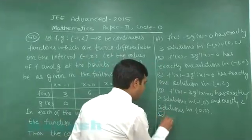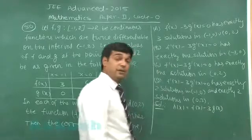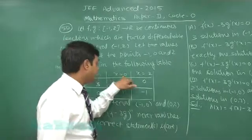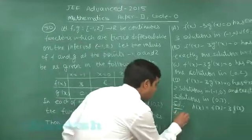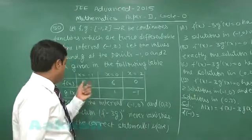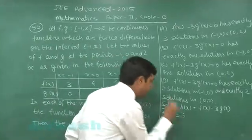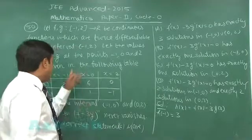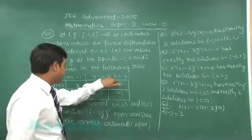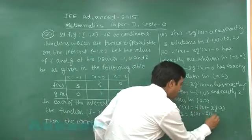Let us start it by considering a function h(x) = f(x) minus 3g(x). When I check the value of h(-1), h(-1) equals f(-1) is 3 and g(-1) is 0, so it is simply 3. Similarly, we check h(0) and h(2). We observe that h(-1), h(0), h(2) all are equal. We can apply Rolle's theorem in the intervals -1 to 0 and 0 to 2.